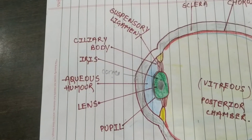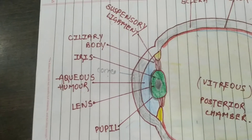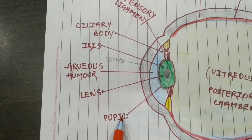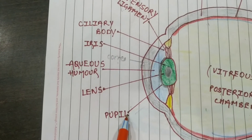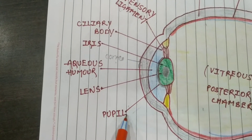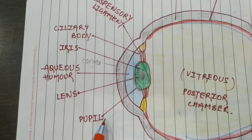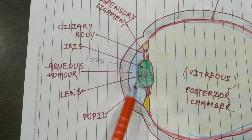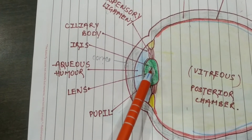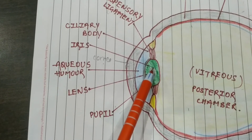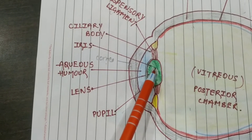Here is the pupil — the pupil appears to be black in the eye, which controls the amount of light entering the eye and adjusts the light capacity of the eye. Here is the iris — the iris is the pigmented, circulated structure concentrically surrounding the center of the eye. It is the pigmented structure of the eye.